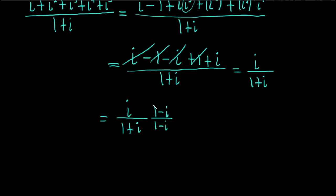All right, really, really nice. Basically, we're multiplying by 1 in a really clever way. So this is equal to, so now we can distribute the i, i times 1 is i, and i times negative i is negative i squared.